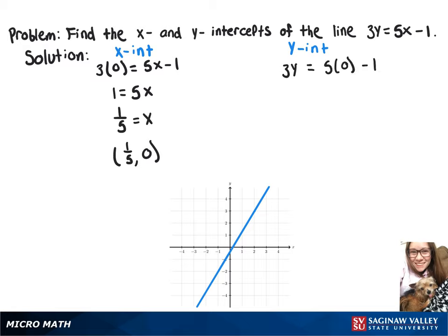And then when we divide both sides by 3, we get y equals negative one-third. So our y-intercept is 0, negative one-third.